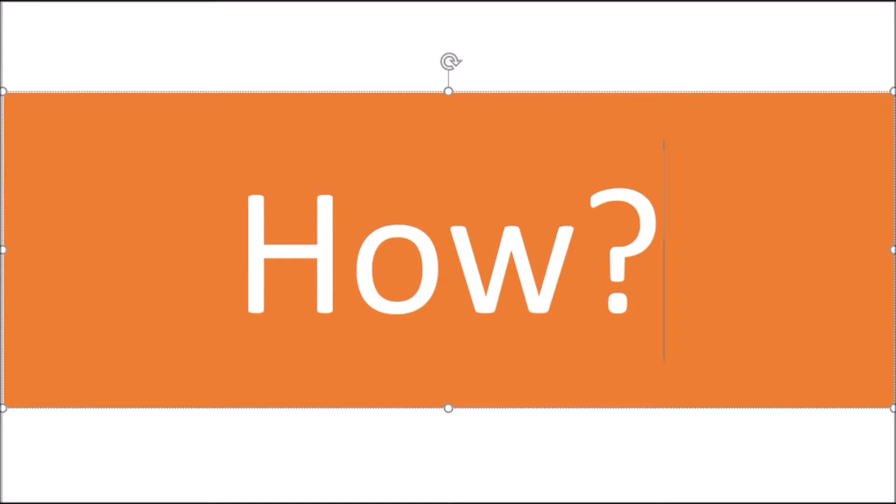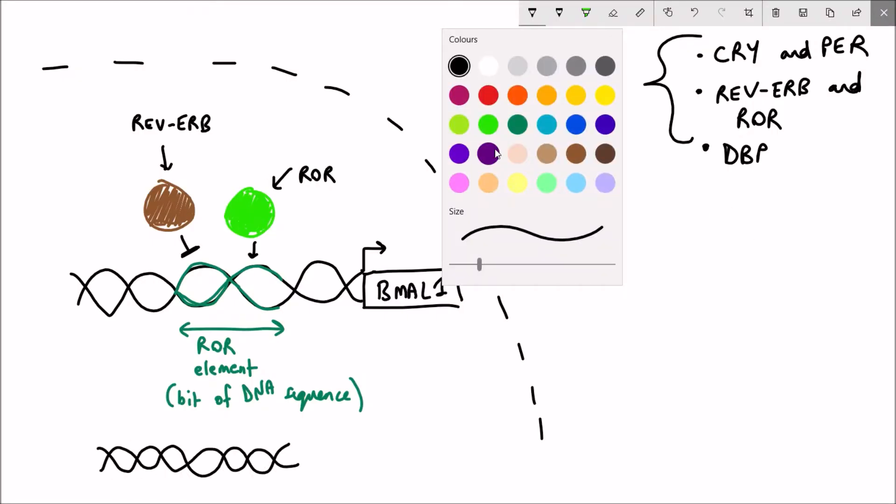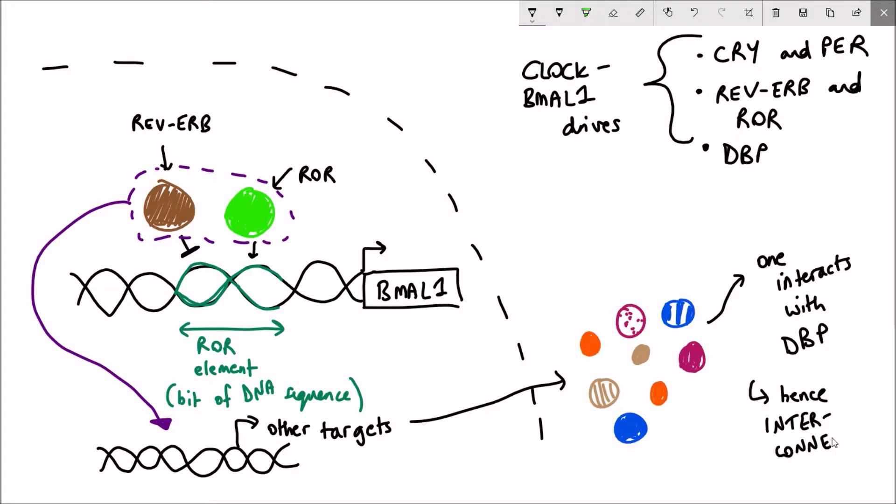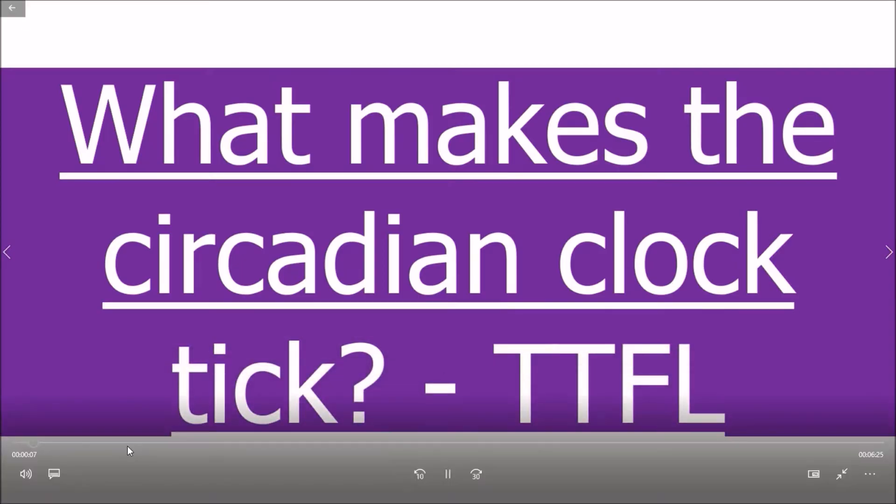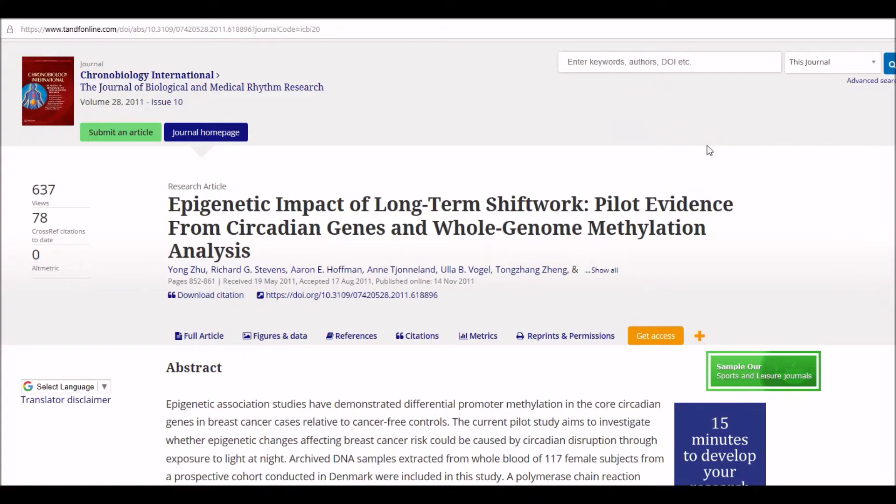How could shift work be having an impact? A key readout for a healthy circadian clock is gene expression patterns. Part of gene expression patterns is governed by the epigenetic state of a cell. We touched on this last time, I'll put the link in the description, of how the key clock factors, the transcription factors, actually regulate gene expression.